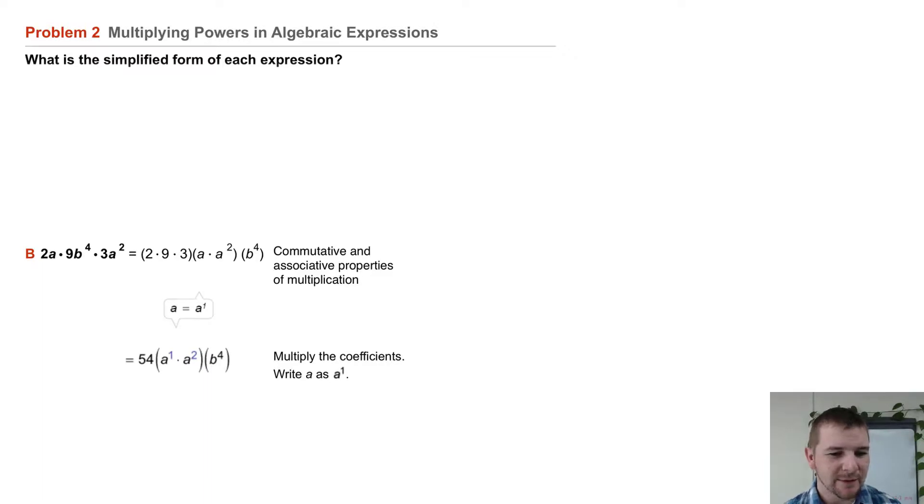Combining these, 2 times 9 times 3 is 54. A to the first times a squared will equal a to the third power. And b to the fourth just remains b to the fourth throughout the problem. So in the end we have a simplified version, 54a cubed b to the fourth power.